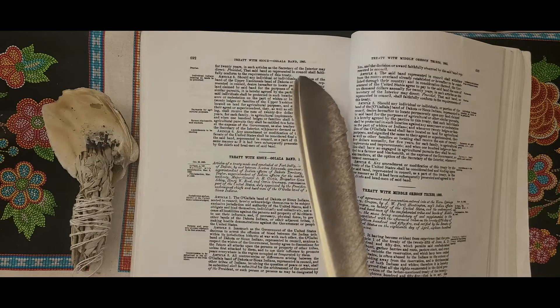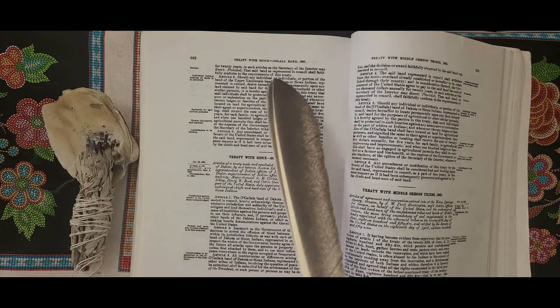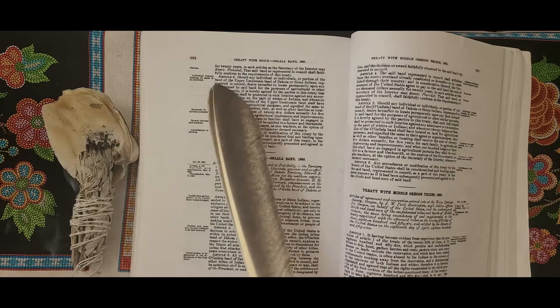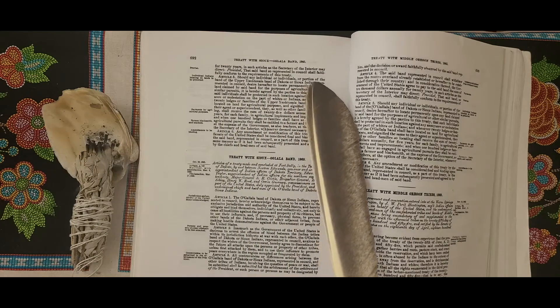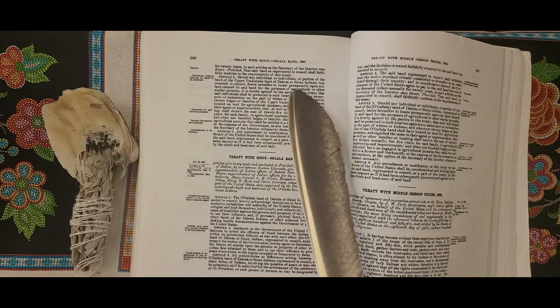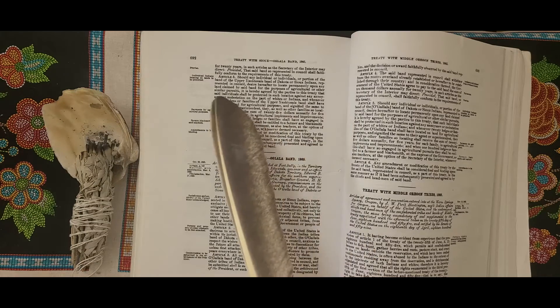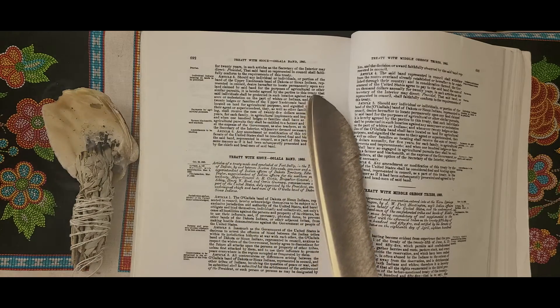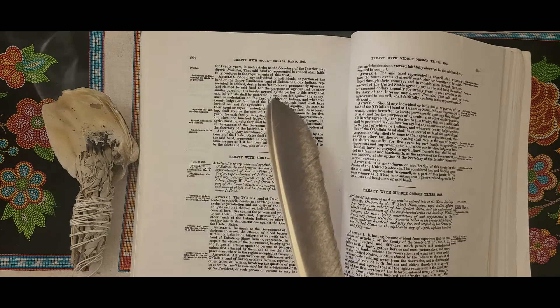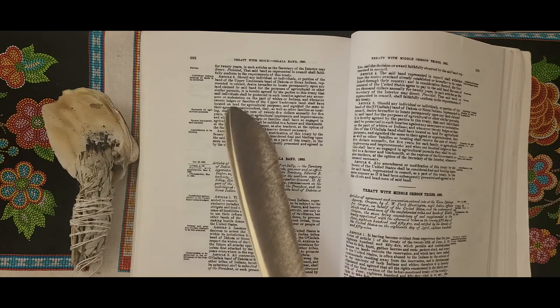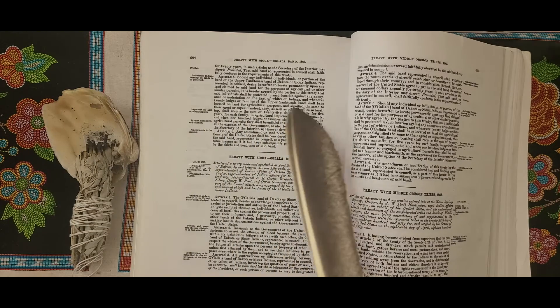Article 5: Should any individual or individuals or portion of the Upper Yanktonai Band of Dakota or Sioux Indians represented in council desire hereafter to locate permanently upon any land claimed by said band for the purposes of agriculture or other similar pursuits, it is hereby agreed by the parties to this treaty that said individuals shall be protected in such location against any annoyance or molestation on the part of whites or Indians.